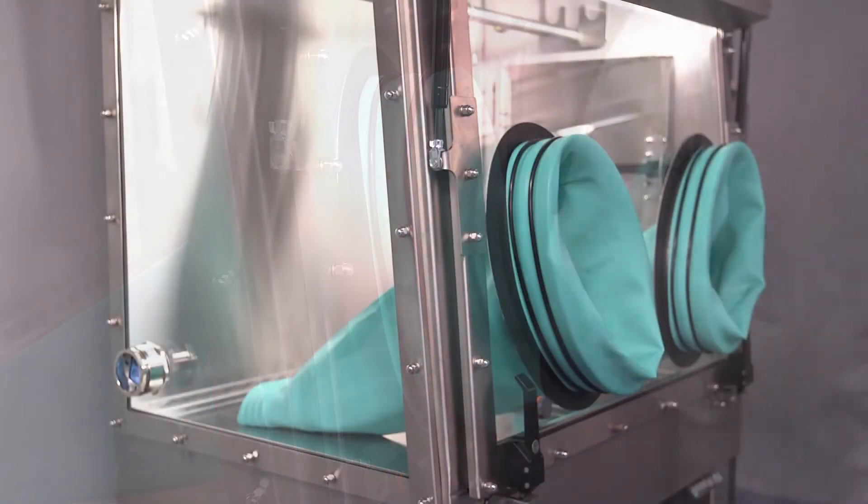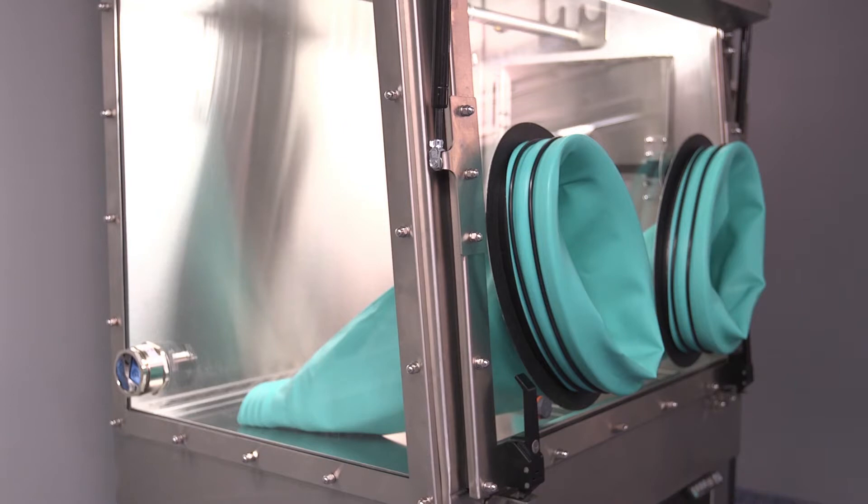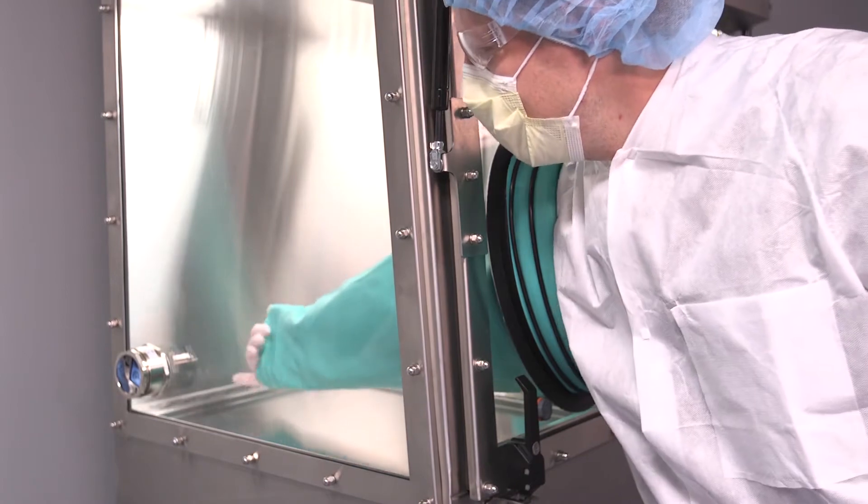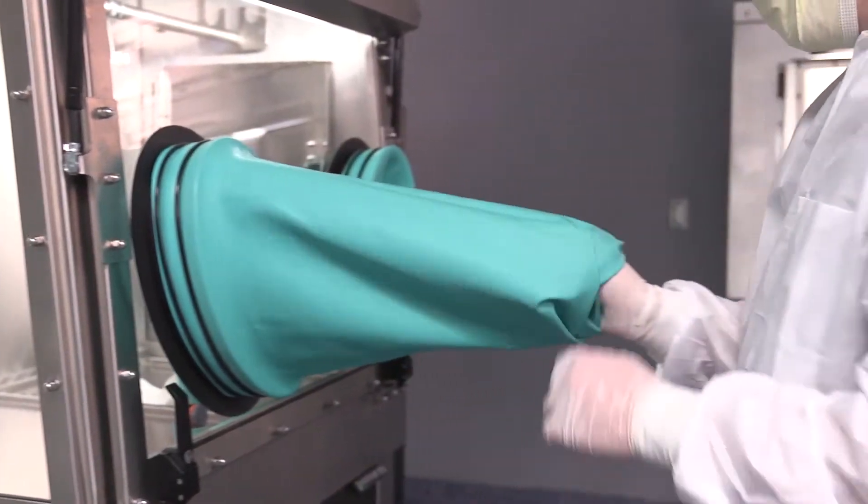If you are using a two-part glove sleeve, you can attach any commercially available glove that is 12 inches long or longer. Contact Germ-Free or Contech for more information about gloves. To do this, first pull the glove sleeve out of the box so that the sleeve is inside out.